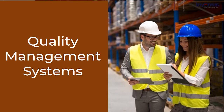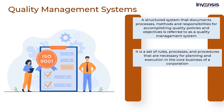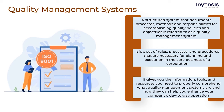Now let us understand what quality management systems are. A structured system that documents processes, methods, and responsibilities for accomplishing quality policies and objectives is referred to as a quality management system, QMS. A QMS aids in the coordination and direction of an organization's activities in order to meet customer and regulatory requirements while also continuously improving its effectiveness and efficiency. It is a set of rules, processes, and procedures that are necessary for planning and execution in the core business of a corporation. It gives you the information, tools, and resources you need to comprehend quality management systems and how they can help you enhance your company's day-to-day operations. A quality management system such as ISO 9001 is an example.